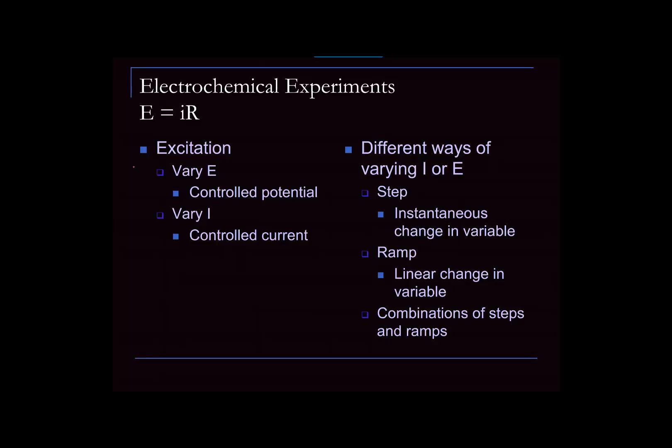All electrochemical experiments boil down to Ohm's law — E equals IR, or V equals IR as you may have learned in physics. You can either control the potential and measure the current, or control the current — injecting or withdrawing charge — and measure the potential the system assumes. These two different approaches form the basis for the two main branches of electrochemistry: controlled potential methods and controlled current methods. In controlled potential methods we vary the potential; in controlled current methods we vary the current.